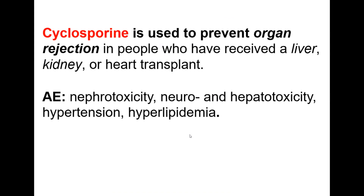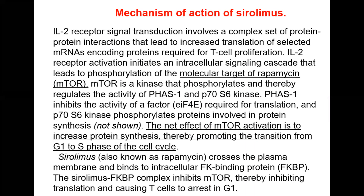Cyclosporine is used to prevent organ rejection in liver, kidney, or heart transplantation. Due to its selective action on cellular immunity, it does not inhibit B-cell proliferation, so there is no bone marrow suppression. However, cyclosporine is toxic — it can cause nephrotoxicity, neurotoxicity, hepatotoxicity, hypertension, and hyperlipidemia.